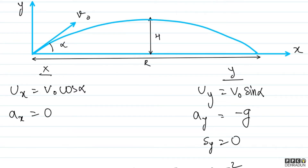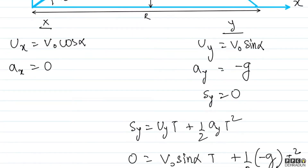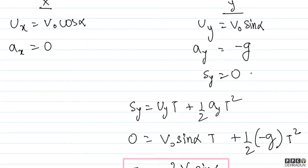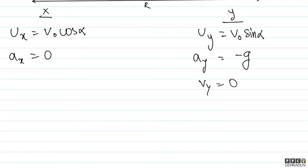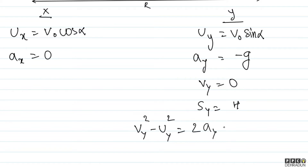So we understand that at the point where the particle reaches maximum height, its velocity along y will become zero. So let's come back to the y-world and say: when vy = 0, we need sy. I set vy = 0 because if vy is not zero, that is not maximum height — the particle still has tendency to go higher. So when vy = 0, sy becomes h. The formula to use is v² − u² = 2as, meaning vy² − uy² = 2·ay·sy.